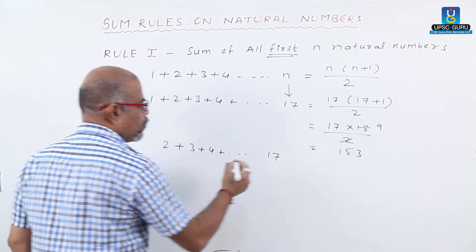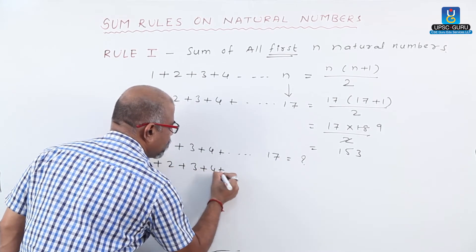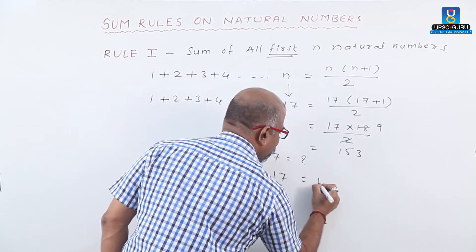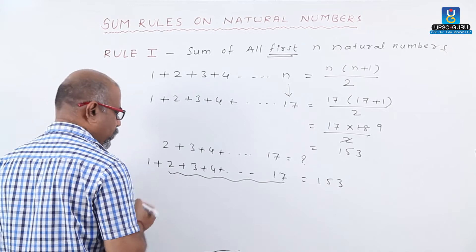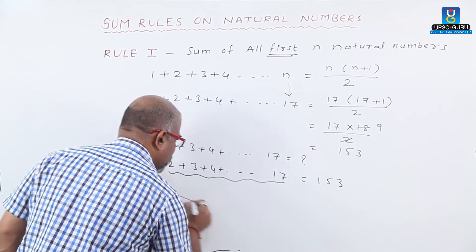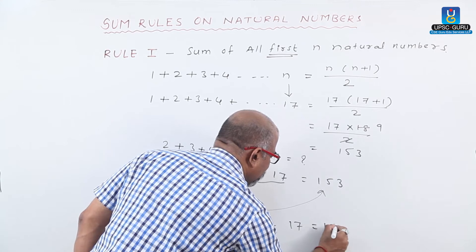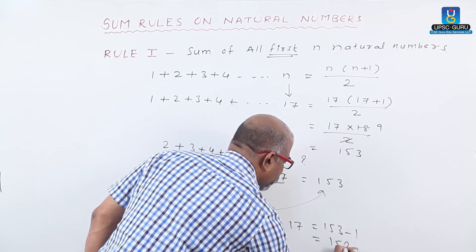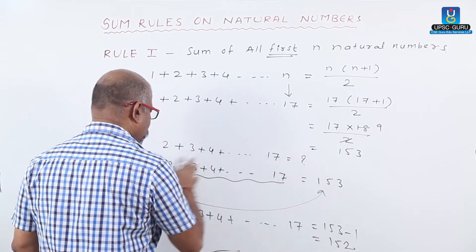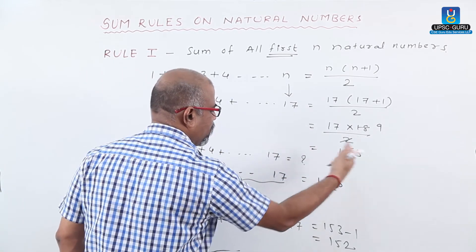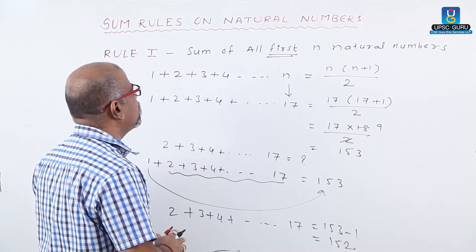Now suppose the question asks: find 2 plus 3 plus 4 up to 17. We know the sum of 1 plus 2 plus 3 up to 17 equals 153 by the formula. But since we want the sum starting from 2, we subtract the 1 from that side: 2 plus 3 plus 4 up to 17 equals 153 minus 1, giving 152. Similarly, for 3 to 17: 153 minus 3 equals 150, and so on.